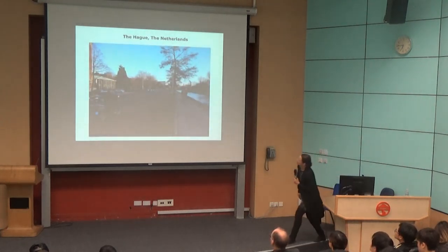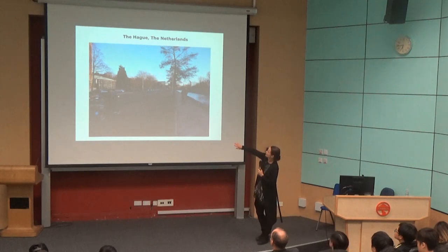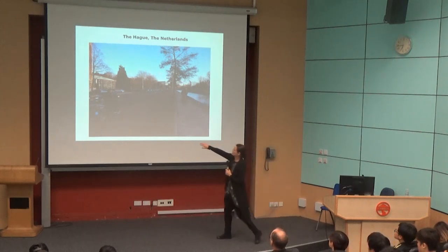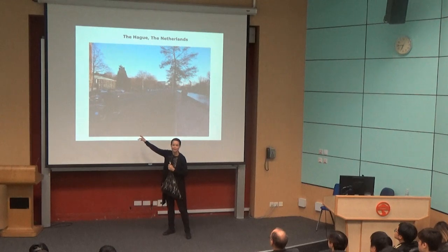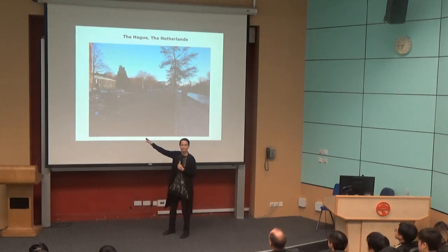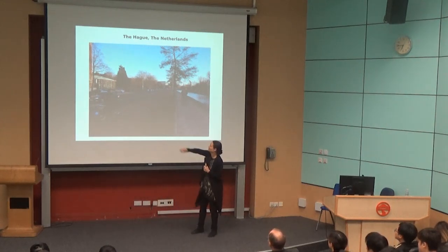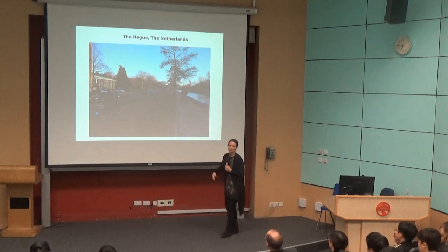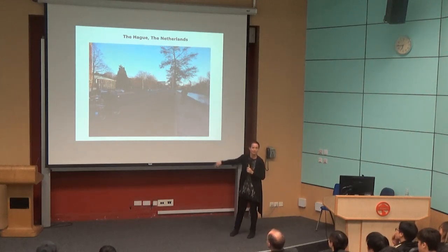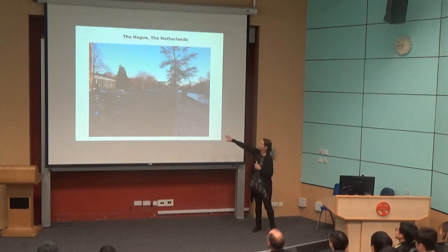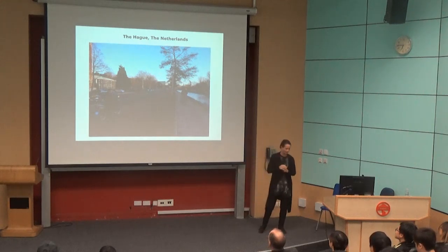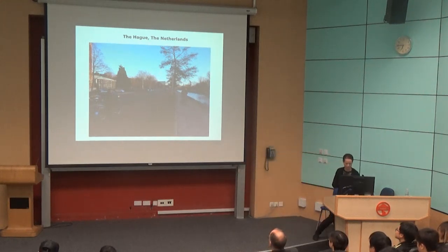There's a similar example in the Hague in the Netherlands. There's a road, interestingly with a motorcycle allowed on the cycling path, and a separate footpath. It's a layout that's conducive to helping with air pollution and exposure.